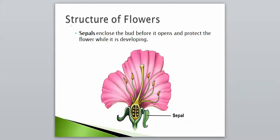Our first structure is the sepal. You can see we have our big pink petals here, which is what we usually see, and right down here below is the sepal. These enclose the bud before it opens and protect the flower while it is developing. The sepal would be closed up around the bud before the flower blooms, but now it's kind of just fallen over and it's open there.